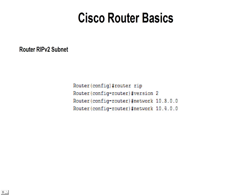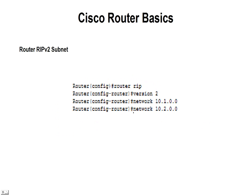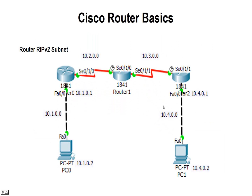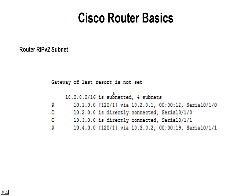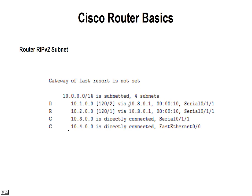Going to router 3, we're going to set network 10.3.0.0 and 10.4.0.0 — these are the two networks directly connected to that third router. You can see 10.3 and 10.4 are directly connected, so those networks need to be set in router RIP so it forwards that information to the other two routers. In the routing table, you can see that 10.1 and 10.2 from the first router are the two networks forwarded to that last router through RIP.